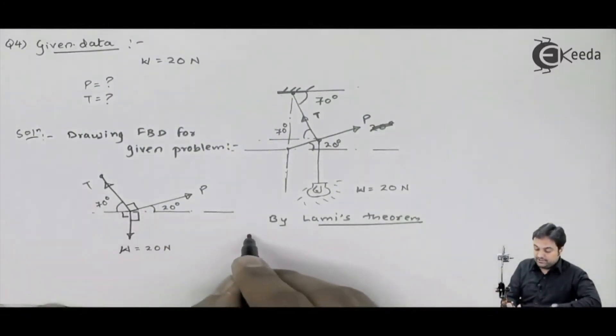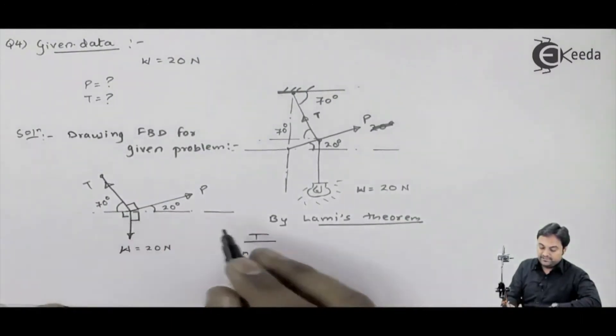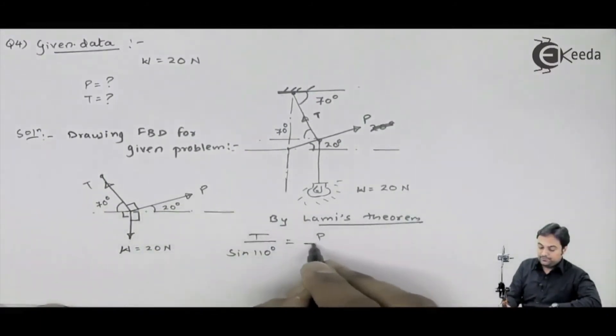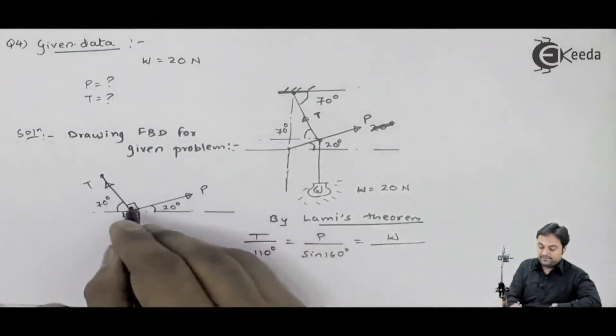Therefore, I will write down capital T upon sin of angle between P and W - it is 20 plus 90, that is 110. Then P upon sin of angle between T and W, 70 plus 90, 160 degrees. W upon sin of angle between T and P, that is 90.